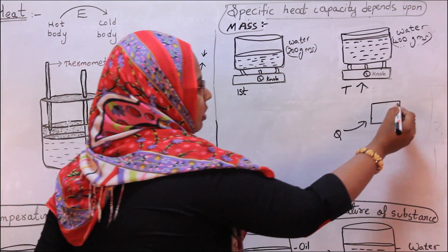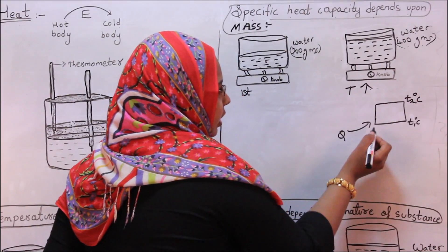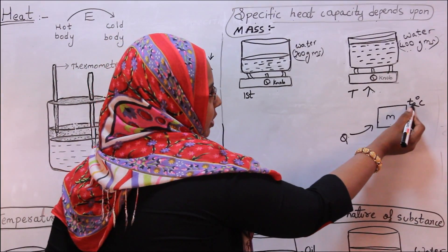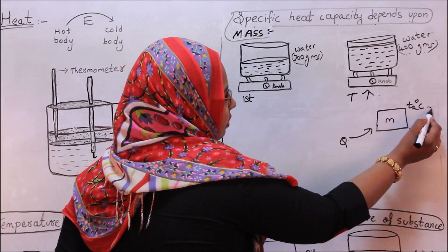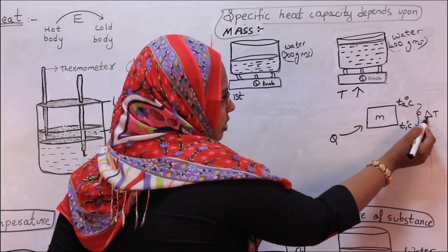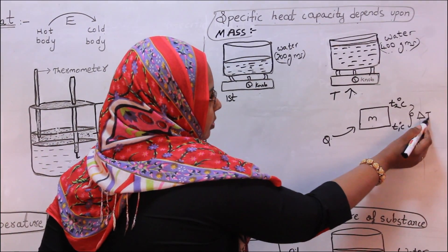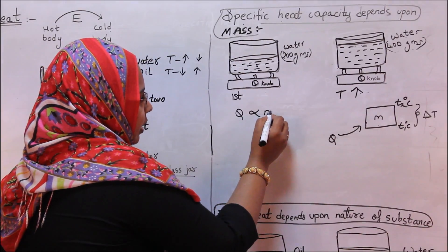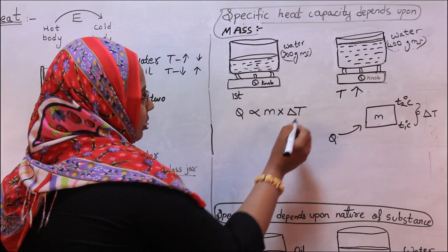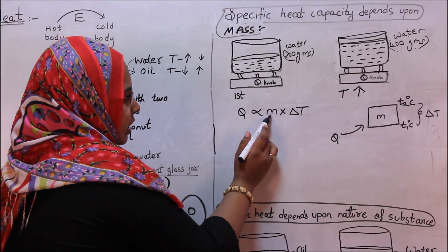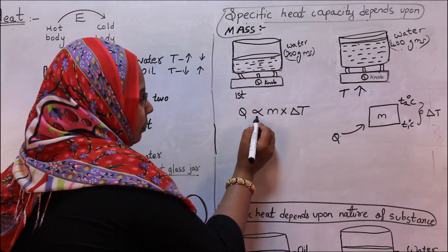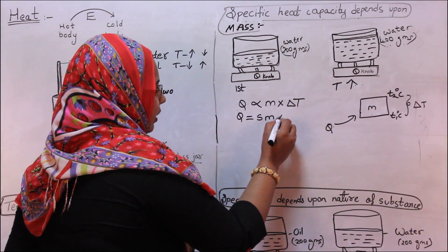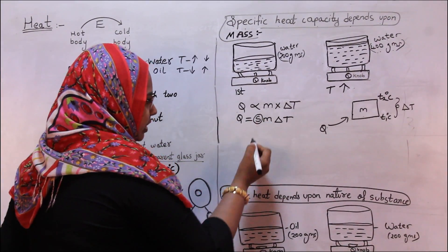Suppose the temperature changes from T1 to T2 degree Celsius. If the mass of the body is less, then the heat required for that change in temperature is also less. We can write the change in temperature as delta T, where delta means change. In equation form: Q is proportional to M into delta T. Here Q is heat, M is mass, and delta T is change in temperature. To remove the proportionality sign, we introduce a constant S, giving us Q equals S M delta T. This S is the specific heat capacity.